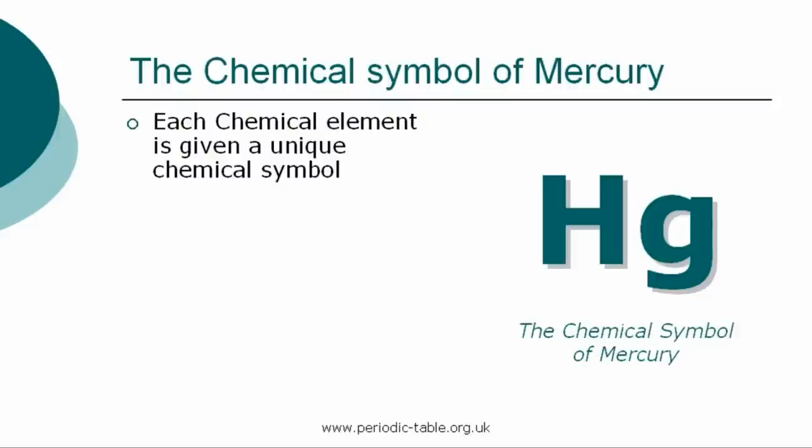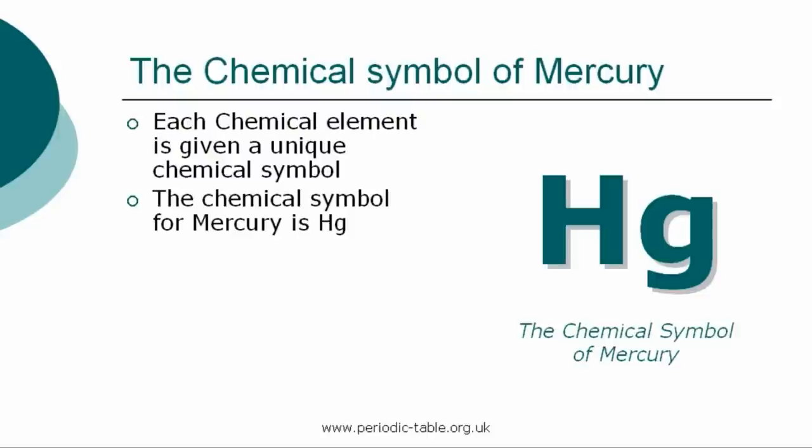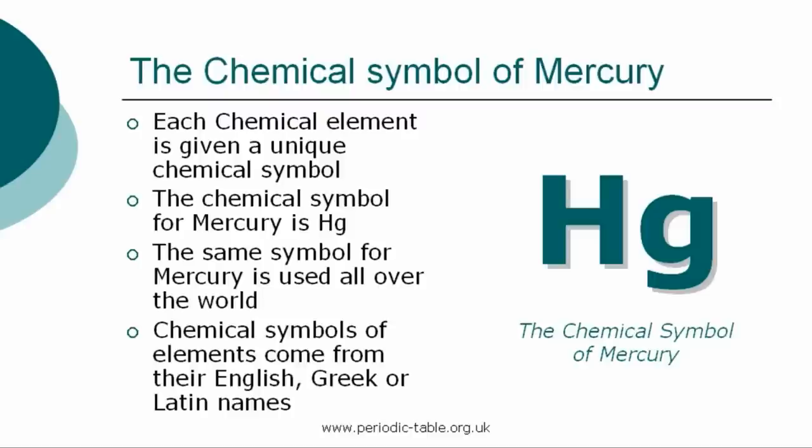Each chemical element is given a unique chemical symbol, which is used all over the world. The chemical symbol for mercury is Hg. The chemical symbols of elements come from their English, Greek, or Latin names.